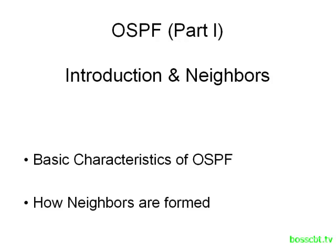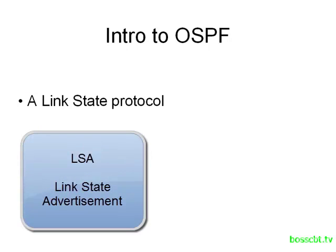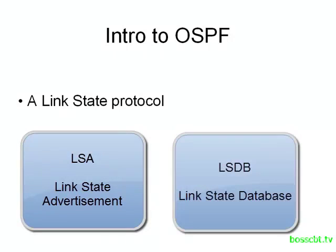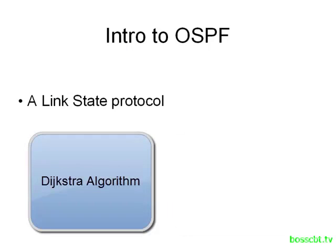Let's get started with the overview. If you've already watched the link state routing protocols tutorial, then you know that OSPF is a link state routing protocol. It has the characteristics of creating neighbors and exchanging network information by using LSAs. It also keeps a local link state database where it has all the information about the network, and it applies an algorithm to that data in order to determine the best routes.